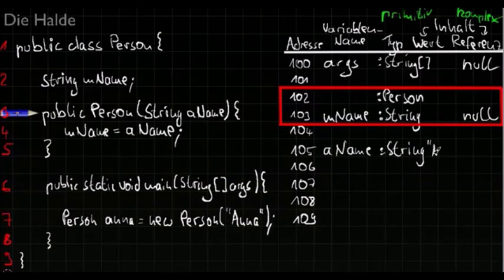And this variable gets its input down there and the input is Anna. So the value is Anna. Therefore I write Anna into the value column and don't use the reference column. Only declared strings can have several characters in the value column.